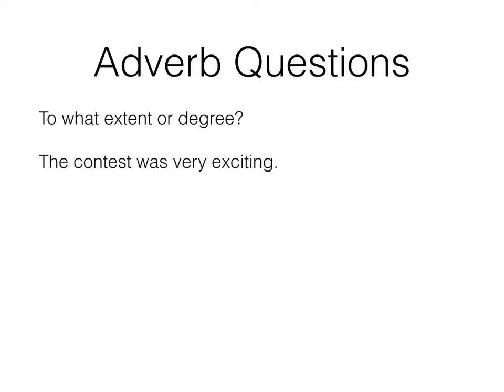Finally, we have to what extent or degree. 'The contest was very exciting.' Contest is our subject; was is our verb. Very is describing exciting — how exciting was it? Very exciting. It's describing an adjective, so that makes it an adverb.